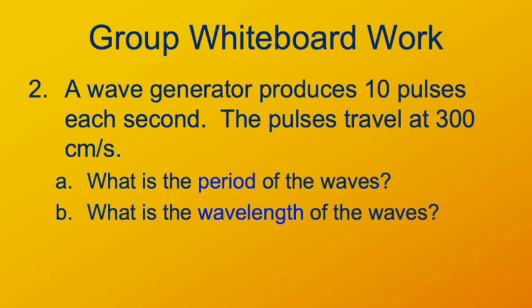Now a quantitative question: you have a wave that's 10 pulses per second, and the pulses travel at 300 centimeters per second. What's the period? What's the wavelength? For the period: 10 pulses per second is the frequency, so the period is the reciprocal — one tenth of a second, or 0.1 seconds. For the wavelength: in one second it travels 300 centimeters with 10 pulses, so each pulse occupies one tenth of 300 centimeters — 30 centimeters.